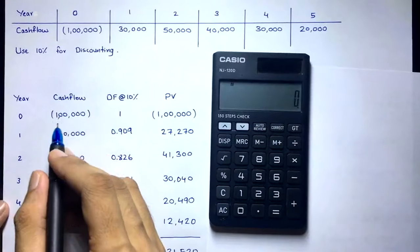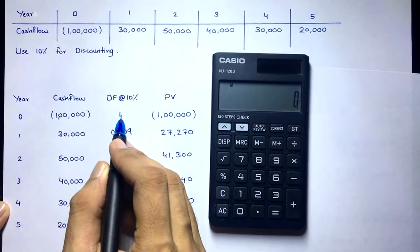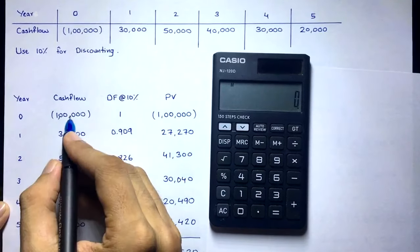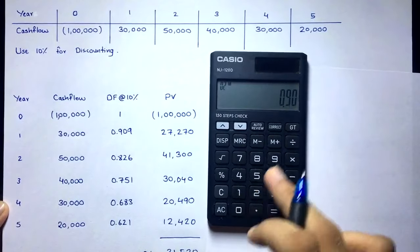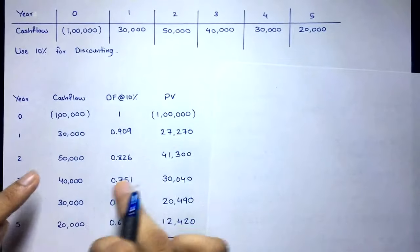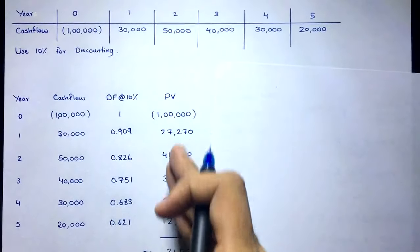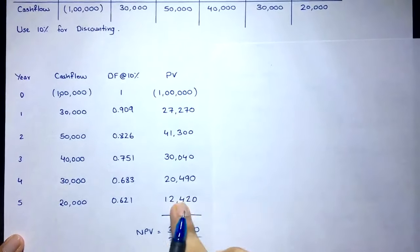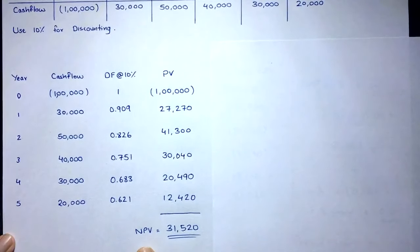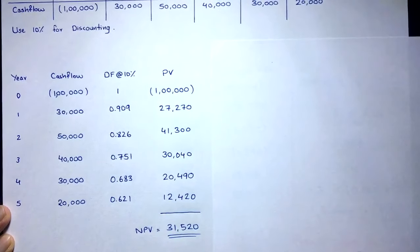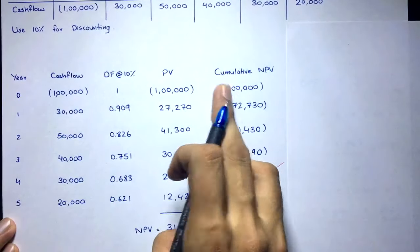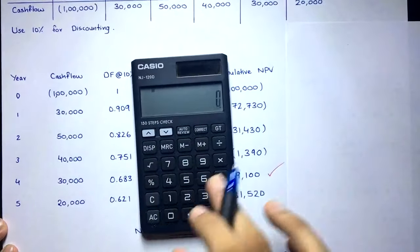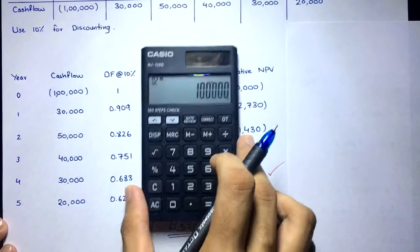The initial investment happens on day one, so its discounting factor is 1 — one lakh times 1 equals one lakh. Now apply the payback technique using cumulative NPV. Start with minus one lakh. Add the year-one present value of 27,270: cumulative = minus 72,730. Add year-two present value of 41,300: cumulative = minus 31,430. Add year-three present value of 30,040: cumulative = minus 1,390. Still negative — we need 1,390 more to recover the initial investment.